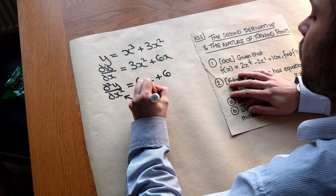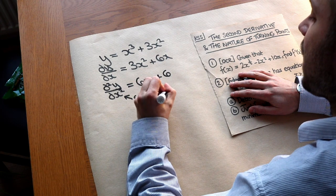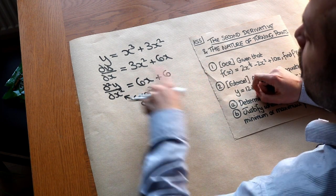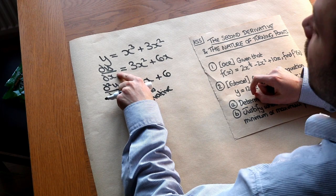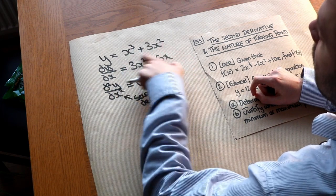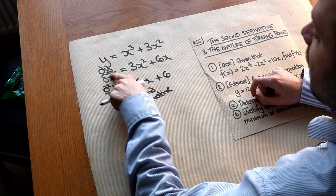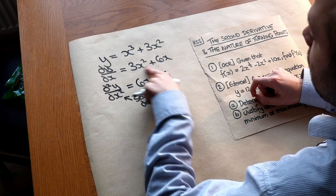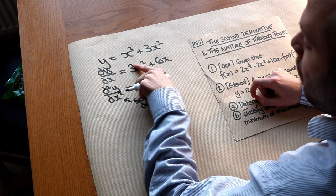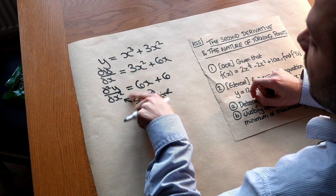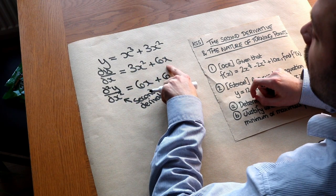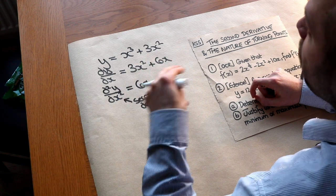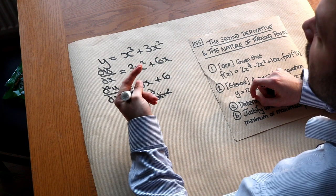What the second derivative represents conceptually is how the gradient is changing. Remember, when we differentiate, that gives us the rate of change of something. So if dy/dx represents the gradient function, then when we differentiate it again, it tells us the rate at which the gradient is changing — how is the gradient changing? And that's going to be particularly relevant in a moment.